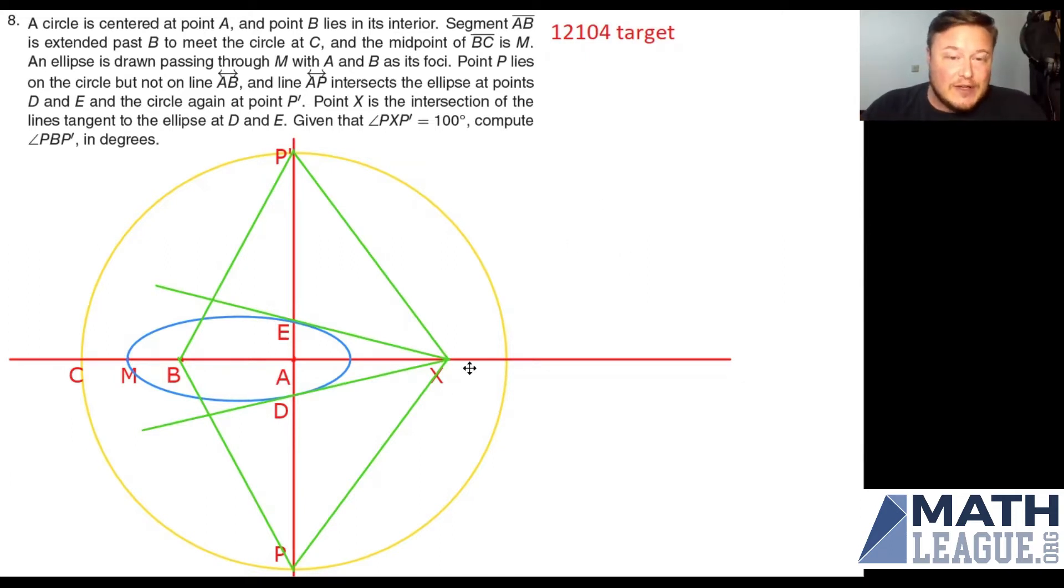You'll notice already that I have created a diagram for this. So probably it's a good idea for me to go ahead and explain a little bit about how I set up the diagram. So what I did is I drew myself a circle, a circle centered at point A. So I drew the yellow circle, I drew the point A. Point B lies in its interior. I went ahead and drew that on a horizontal line just because it made it easier for me to draw it and for me to see the symmetries that will inevitably come from this diagram.